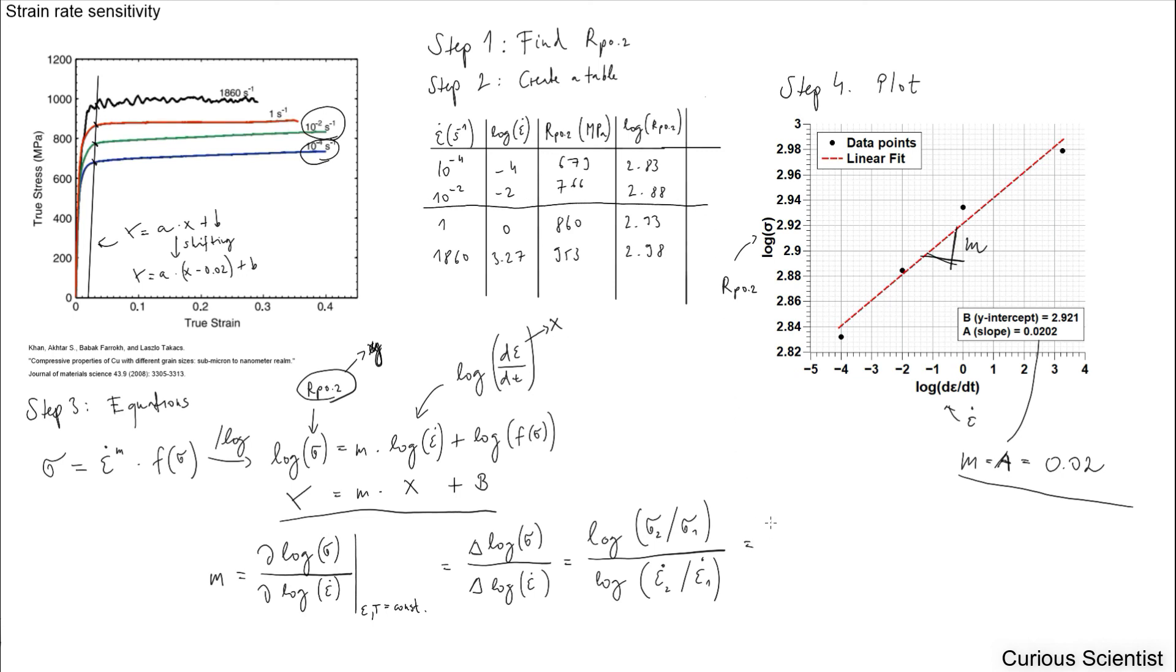Then you can say let's divide these things. So you take 766 divided by 679. And then here it's the same. You take here 10 to the minus 2 divided by 10 to the minus 4. And then what you get here is 0.026.